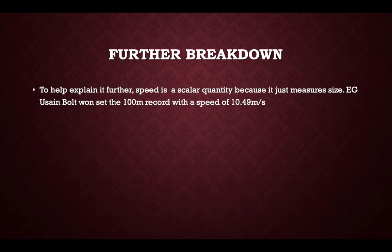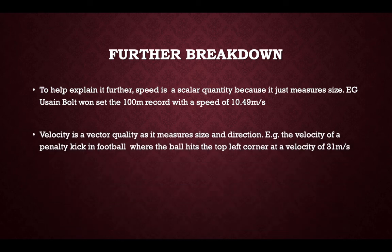To help further: speed is a scalar quantity because it is a measurement of size. For example, Usain Bolt won the 100 metre record with a speed of 10.49 metres per second. Velocity is a vector quantity as it measures size and direction — for example, a penalty kick in football where the ball hits the top left corner at a velocity of 31 metres per second.